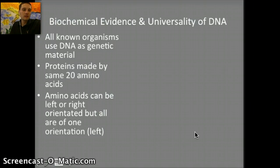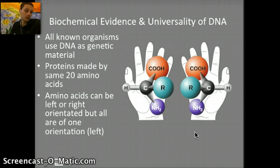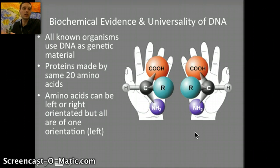Thirdly, amino acids can be left or right orientated, but we actually see that all living organisms use the left-handed orientation. The hypothesis suggests that more left-handed amino acids were discovered in meteorites, suggesting that maybe those original amino acids came to be present on Earth because of a meteorite landing on the planet. It's just one possible hypothesis.